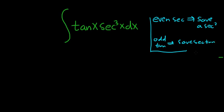There's more stuff to do after this, but if you memorize these two key things, you'll be able to figure it out. I used to resist memorizing this, but I have finally given in. So even secant, save a secant squared. Odd tangent, save a secant tangent.